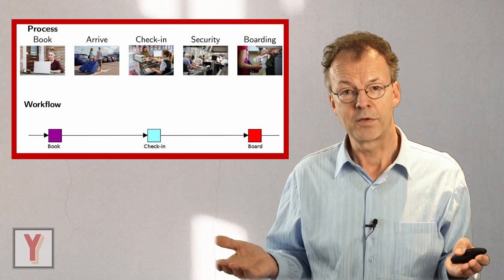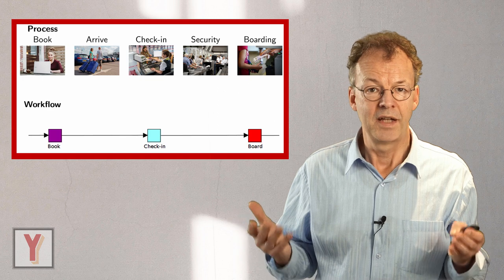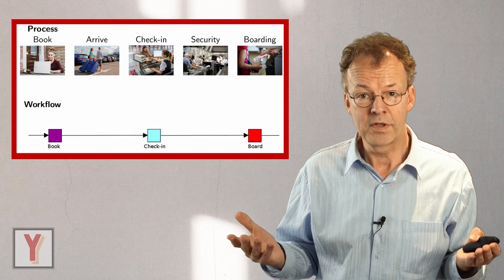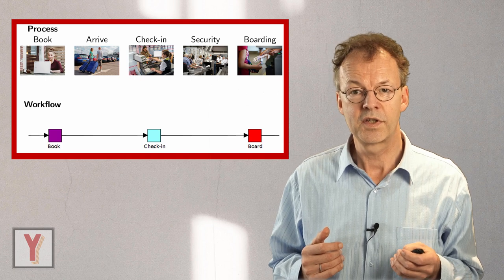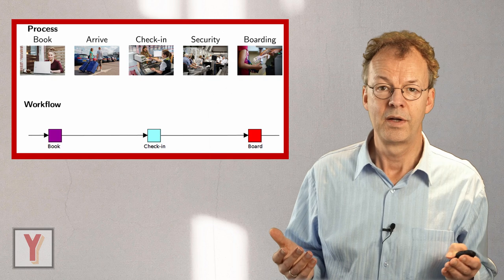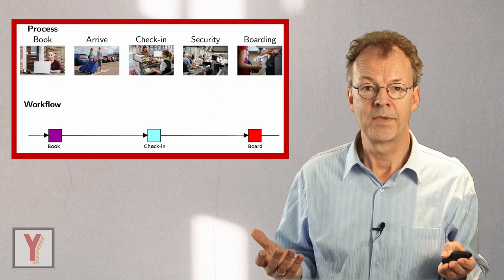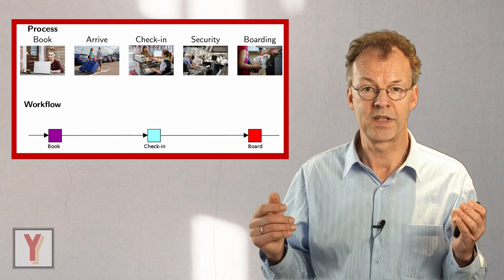And at the check-in counter there is the baggage drop-off and then there is the passport. Everything is controlled. And then the passenger proceeds to the security check and finally goes to the gate where boarding takes place. And then the passenger sits on the plane. So that's the business process.